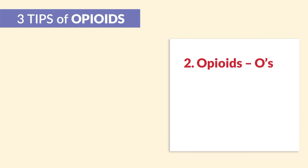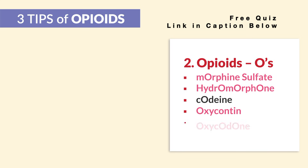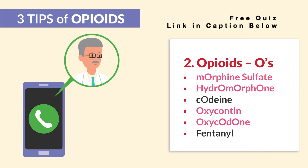Tip number two: opioids have the O's. Morphine sulfate has an O, hydromorphone, codeine, OxyContin, and oxycodone. The weird one is fentanyl, which we'll cover in another segment. But really, all of them kind of sound like 'phone,' so remember to phone the doctor if you see low and slow vital signs.